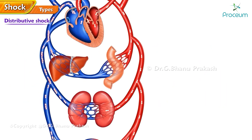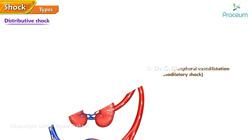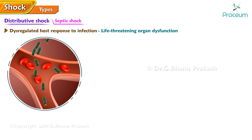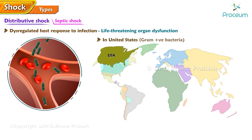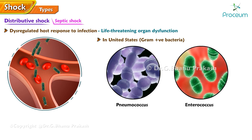Distributive shock is characterized by severe peripheral vasodilation, also called vasodilatory shock. Molecules that mediate vasodilation vary among the etiologies. Septic shock, or sepsis, is defined as a dysregulated host response to infection resulting in life-threatening organ dysfunction, and is the most common cause of distributive shock. In the United States, gram-positive bacteria such as pneumococcus and enterococcus are the most common pathogens responsible for severe sepsis and septic shock.